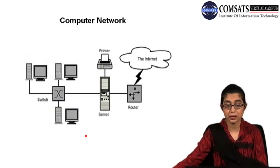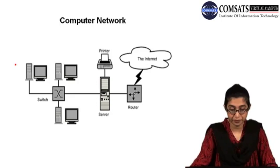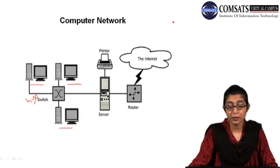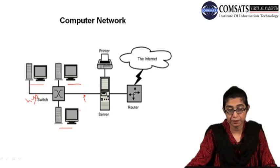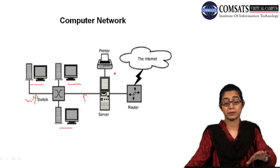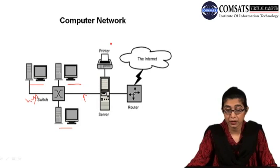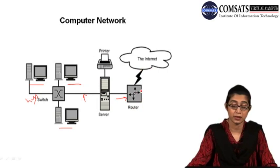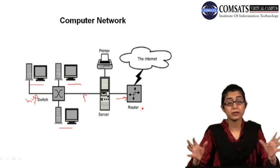Let's have a look at the graphical image. You have different kinds of client servers connected with the help of a switch or hub, connected via physical communication medium. They are all connected with the server that provides different kinds of physical and software resources — for example, a printer. That is connected with the router, which provides access to the internet and may also have the modem functionality. This is a very simple structure of how a computer network is formed: client computers, hub and switch, a server providing functionalities, and internet access via a router or modem.